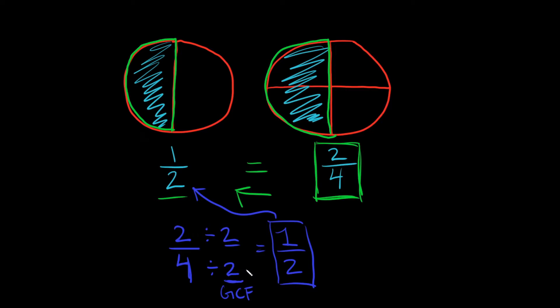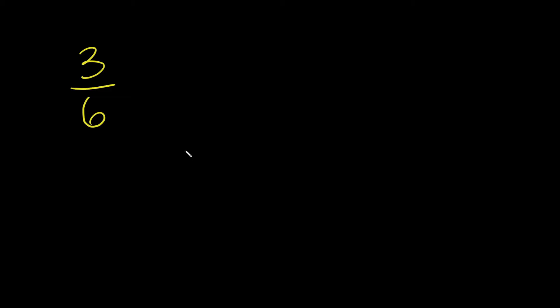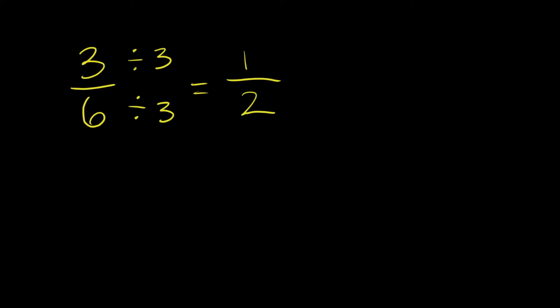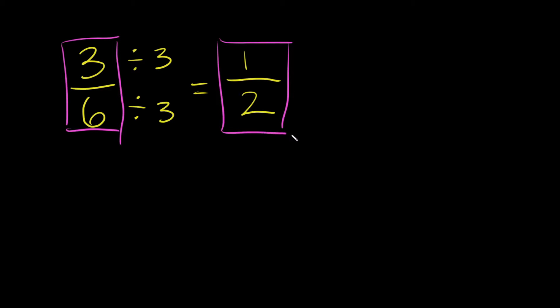So we're going to do a few examples and I think it's going to start making a lot more sense. What if I had the fraction three over six? What's the biggest number that goes into three and six evenly? Well, that would just be three. So we divide the top by three and the bottom by three. Three divided by three is one, six divided by three is two. So we reduced three sixths down to one half, and three is our GCF.